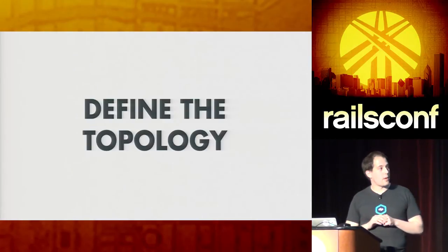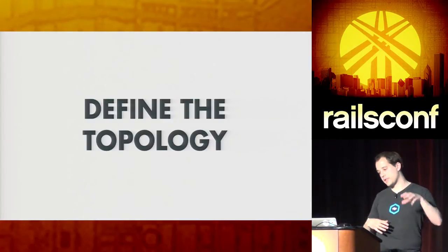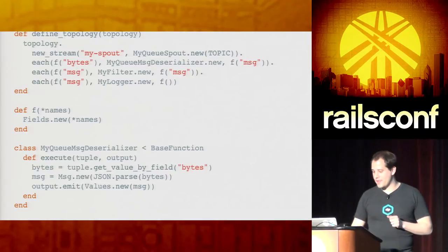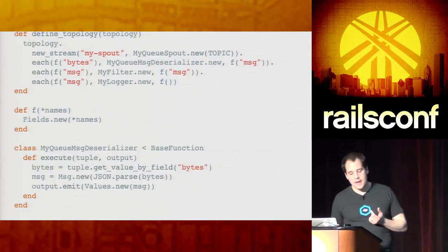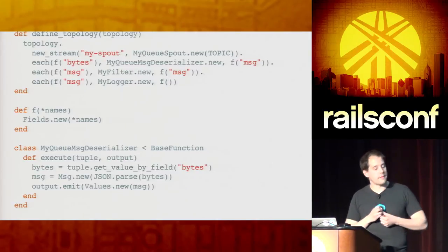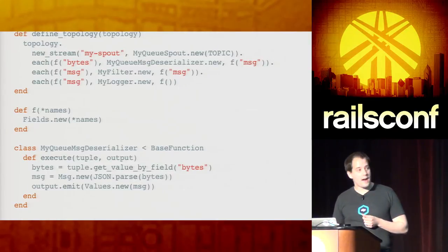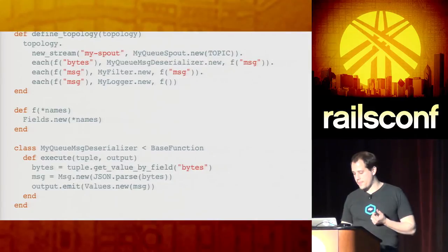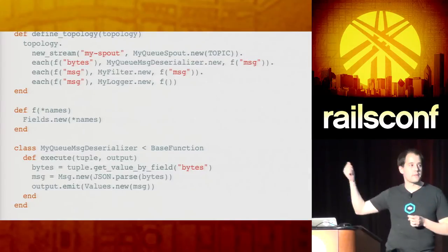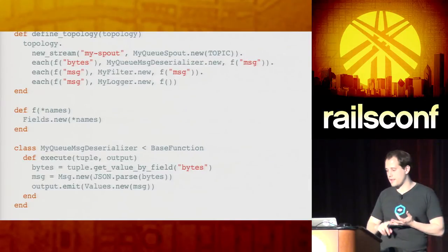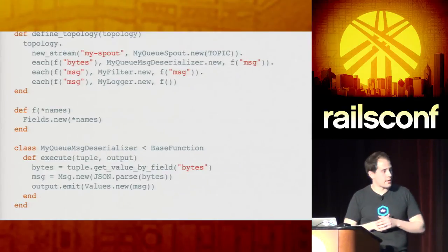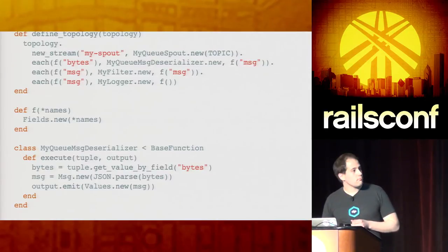The next step is to define the topology — define how all the different transforms and spouts and everything hook up together. You will get a topology object and use a series of APIs to define how things flow together. You start by defining the stream and naming it, in this case 'my spout'. You'd specify a Redis spout, give it the server location and the topic you want to read from. Or if you're using SQS, you'd pass in your credentials and the topic you're reading from.